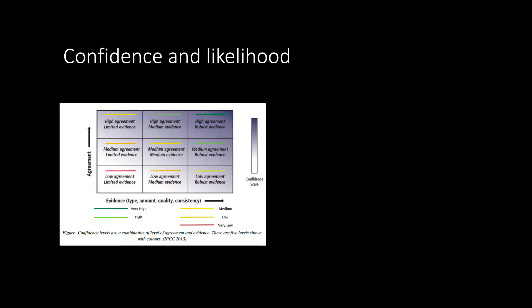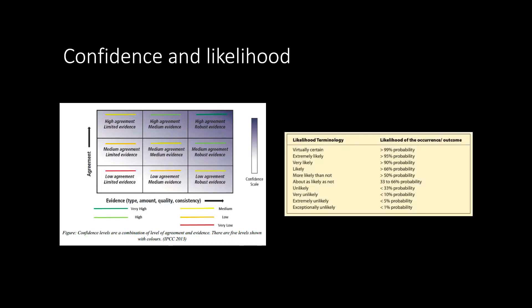When we look at projections, the IPCC will describe the likelihood of the results discussed using this scale. A likely occurrence has a 66% chance of happening, for example, and a very likely occurrence has a 90% chance of happening.